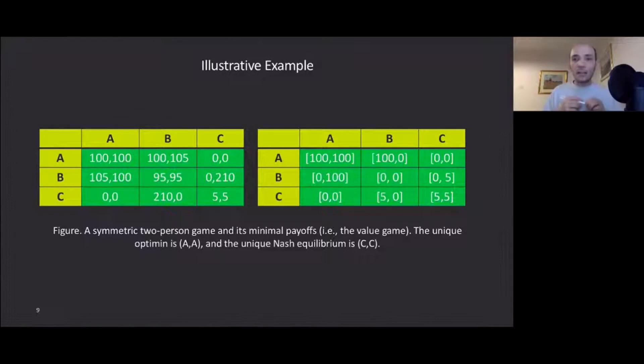Let me give you an illustrative example. Let's focus on the game over here. The unique Nash equilibrium is CC, whereas the unique optimine point is AA. And the reason is as follows. Let's suppose that we agreed on playing AA. However, we make our decisions in separate cubicles independently. Then, I know that you might deviate to B and get a payoff of 105. That's why it's not a Nash equilibrium.